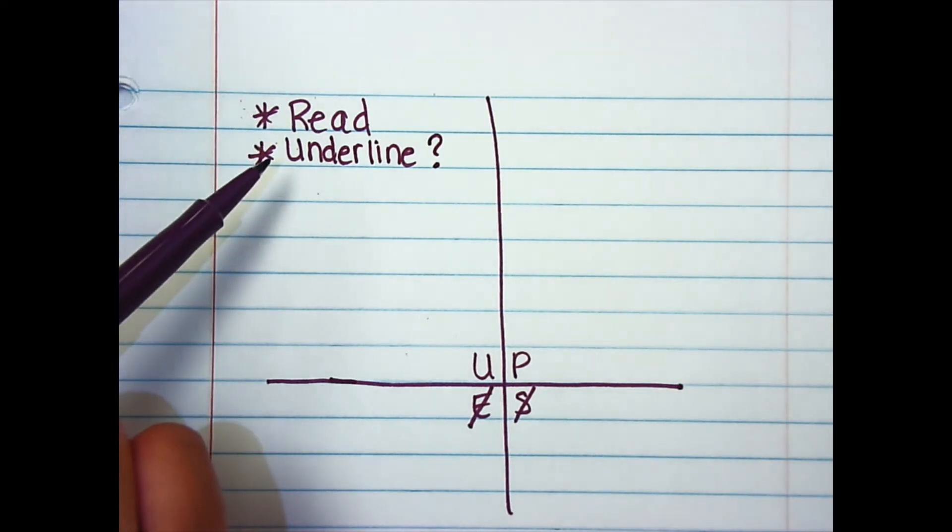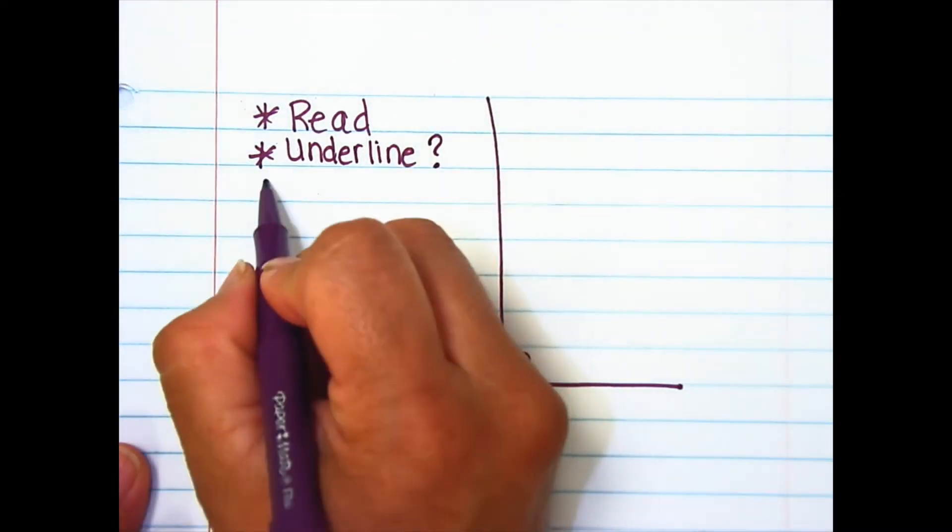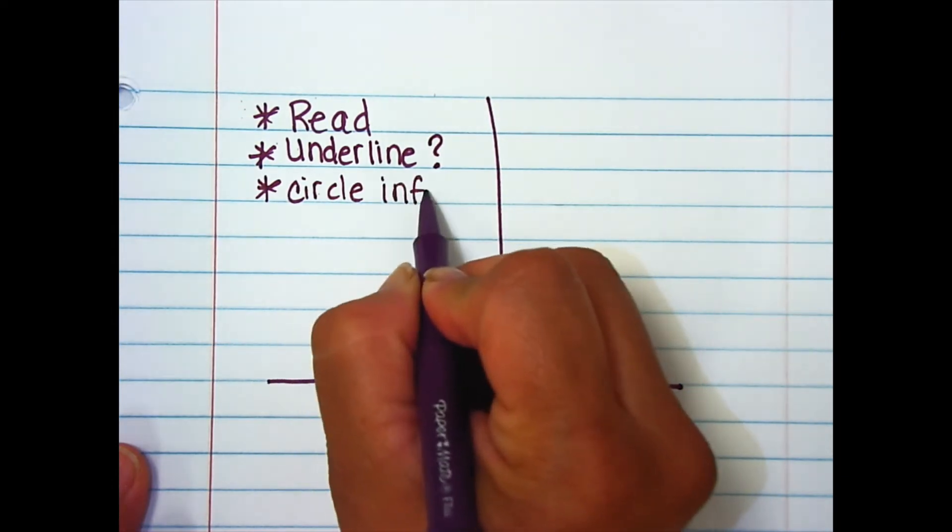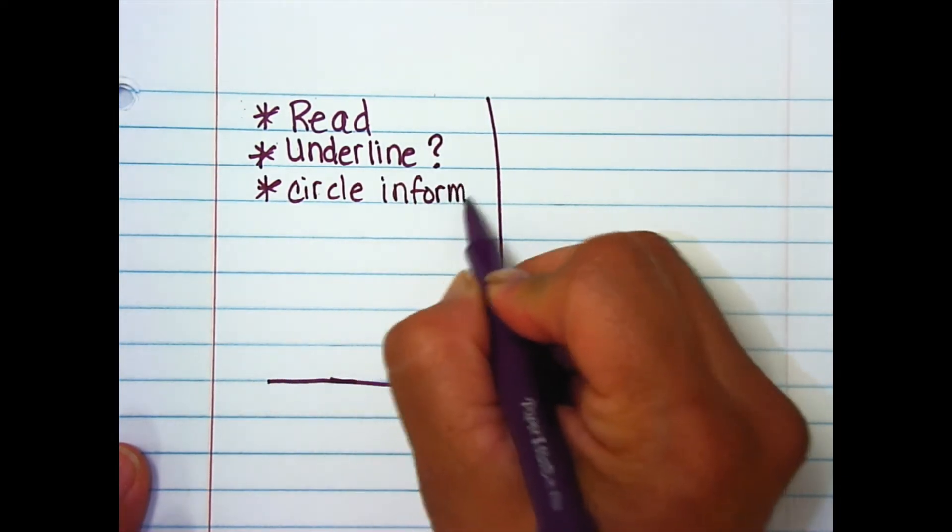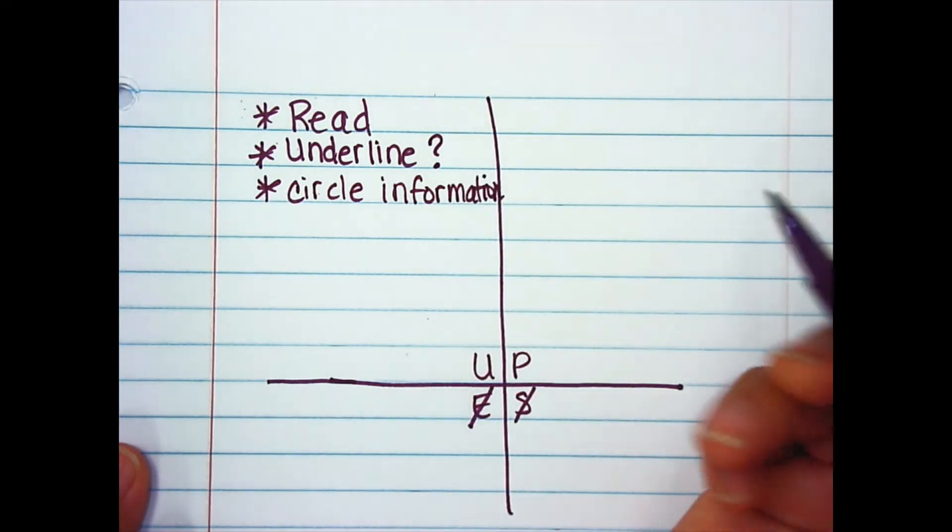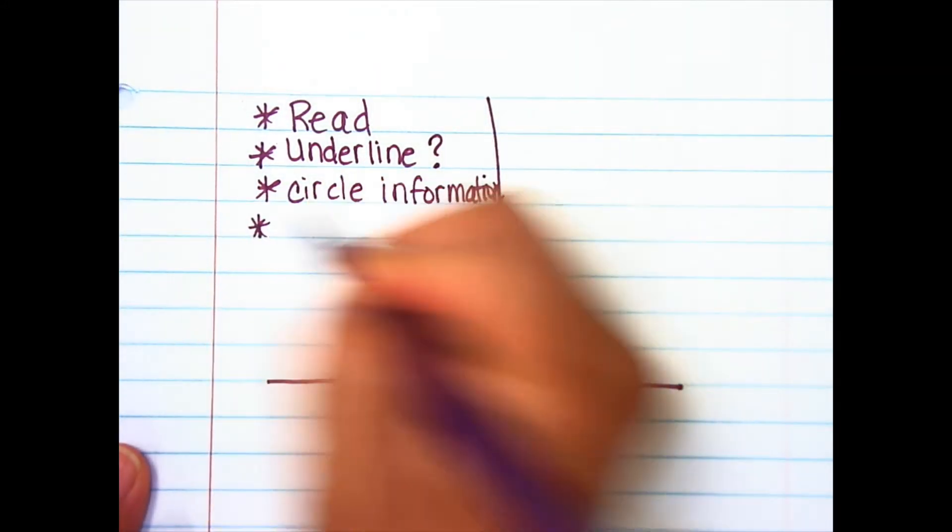So read the problem, underline the question, and as you underline the question, make sure you reread the question. Then you're going to circle your important information. Circle the information you need.